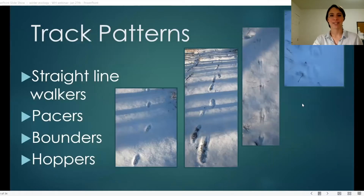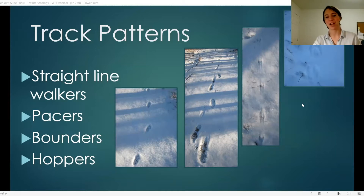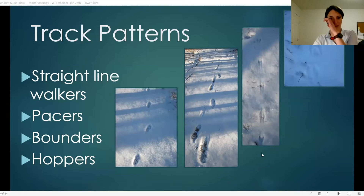First, we have straight line walkers, pacers, bounders, and hoppers. These are four types of tracks, and we'll go through how you can identify what those four different tracks look like and what sort of animals make them.